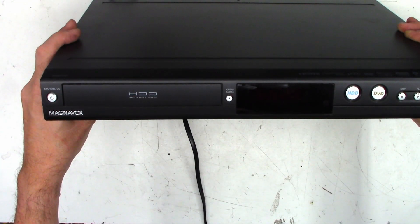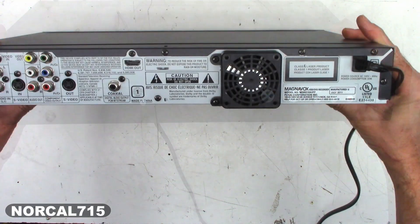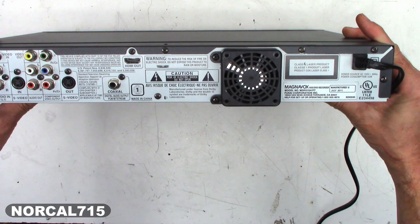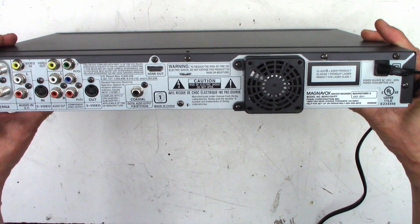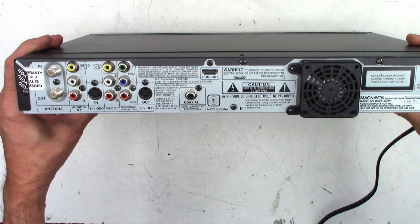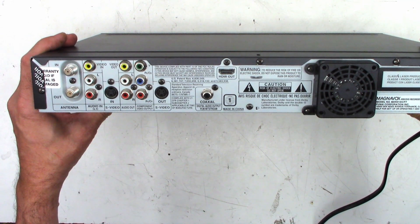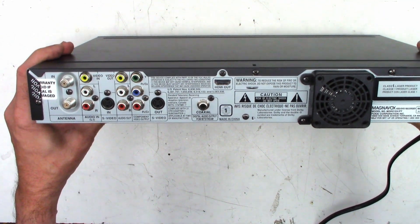This is a Magnavox hard disk drive DVD recorder, model MDR515H/F7, manufactured in July 2011. It has a little cooling fan back there, HDMI output, some inputs and outputs, and antenna input and output. I wonder if it has an NTSC tuner or an ATSC tuner.